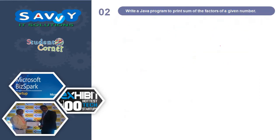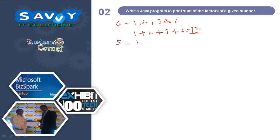The second program is: write a Java program to print the sum of the factors of a given number. The same program with small changes. We already know that the factors of 6 are 1, 2, 3, and 6, so the sum is 1 + 2 + 3 + 6 = 12. If we take 5, the factors are 1 and 5, so 1 + 5 = 6 is the sum.